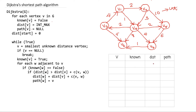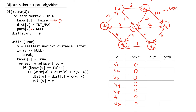I have given a table listing all vertices and their corresponding variable values. First we set known(v) equal to false — I'll write 0 instead of false in the table. I list all vertices: v1, v2, v3, v4, v5, v6, and v7, all with known equal to 0. Then distance is set to INT_MAX — I'll write infinity for simplicity — so distance is infinity for all vertices. Path(v) is set to null, written as 0 in the table.